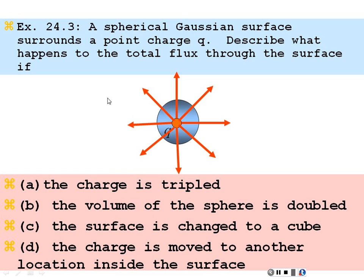What happens if I move the charge to another location inside the surface — not centrally located, but off to one side? The flux lines will be more dense on the side I moved it to and more spread out on the other side, but I'm still going to have the same number of lines eventually exiting that sphere. So even though I moved the charge off center, I still have the same total flux going through that sphere — it's just a little more dense on one side than the other.